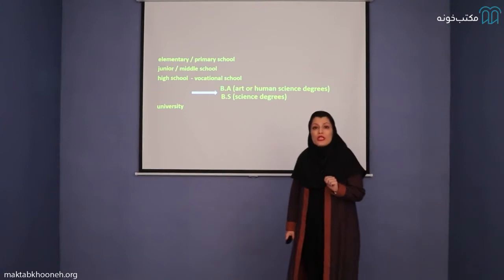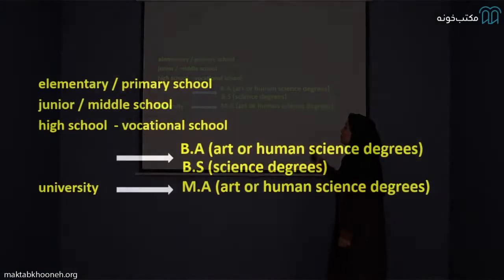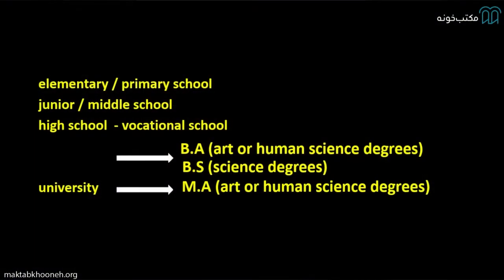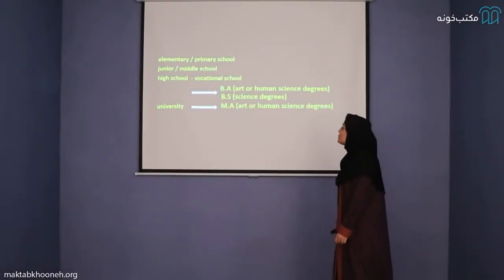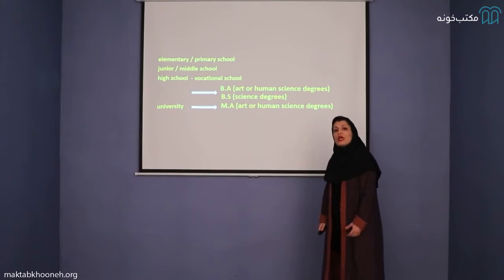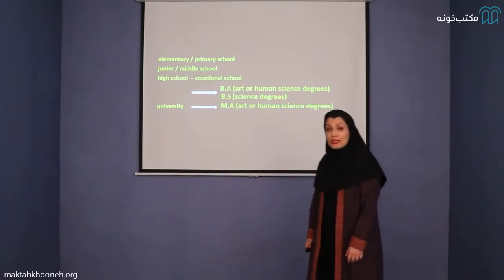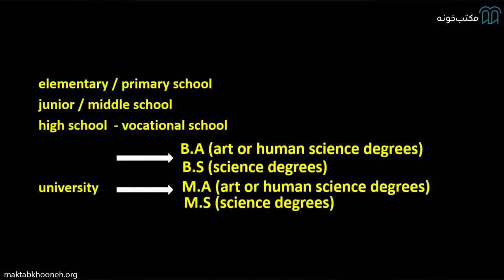After these four years, if you want to continue your education, you get your MA — Master of Art — for Art or Human Science degrees. If you are studying other majors like Engineering or Medicine, you get your MS, Master of Science, for science degrees. Then, if you want to continue your education again, you can get your PhD.